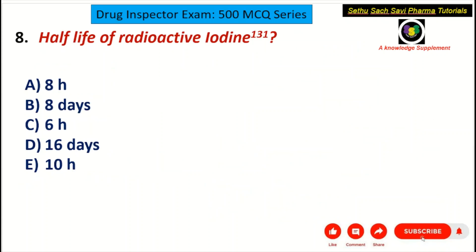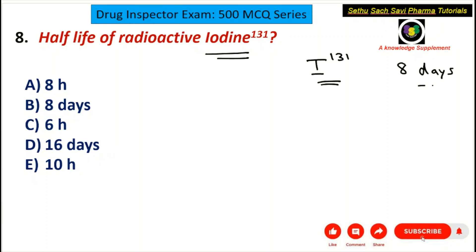Coming to the next question: the half-life of radioactive iodine. Radioactive iodine is a thyroid gland-destroying drug, denoted by I-131. It emits beta rays. The half-life of iodine-131 is 8 days. So the correct answer for this question would be B choice: 8 days.